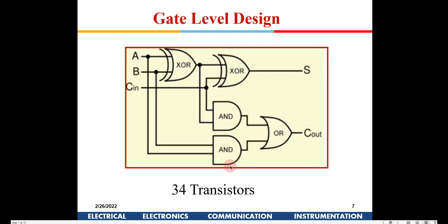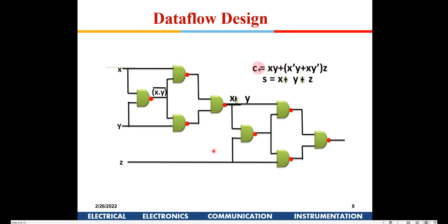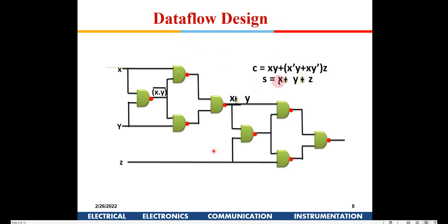You can go one more level up and just define the Boolean expression, letting the software decide how to implement it. The software might use only universal gates, so the transistor count goes higher. But you are not bothered about what kind of gates are used — you just write the Boolean expression to be implemented. This is known as data flow design.